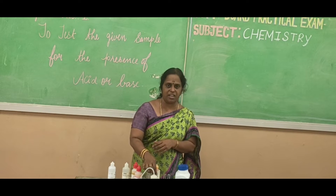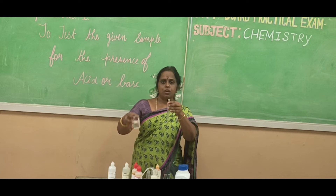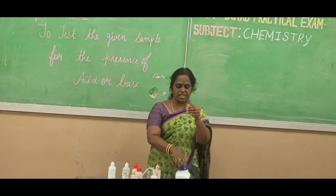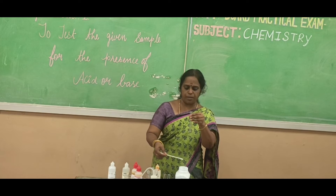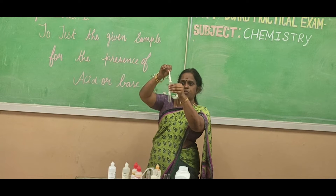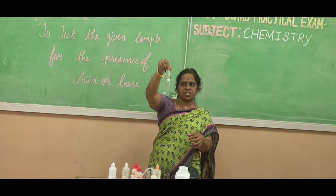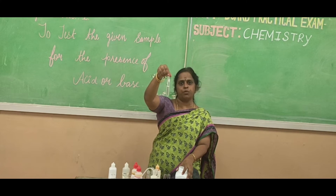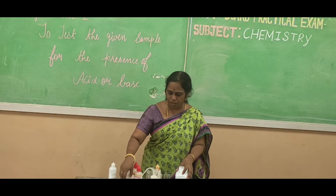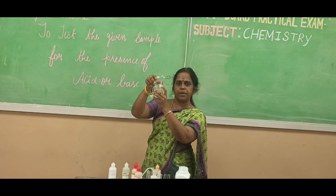Similarly, we proceed to the third indicator — sodium carbonate. Take a test tube, add 5 ml of the test solution, and add a pinch of sodium carbonate to this test solution. What do you observe? You observe brisk effervescence coming out of the test tube, and this also confirms the presence of acid. So the given solution labeled as B is an acid.